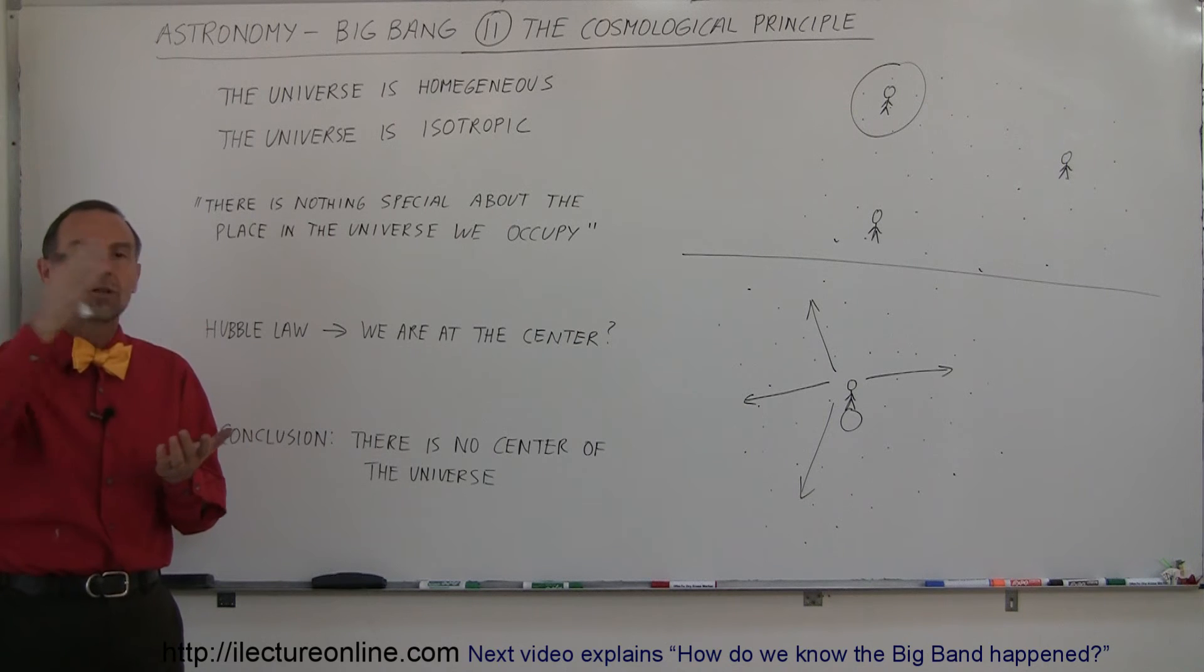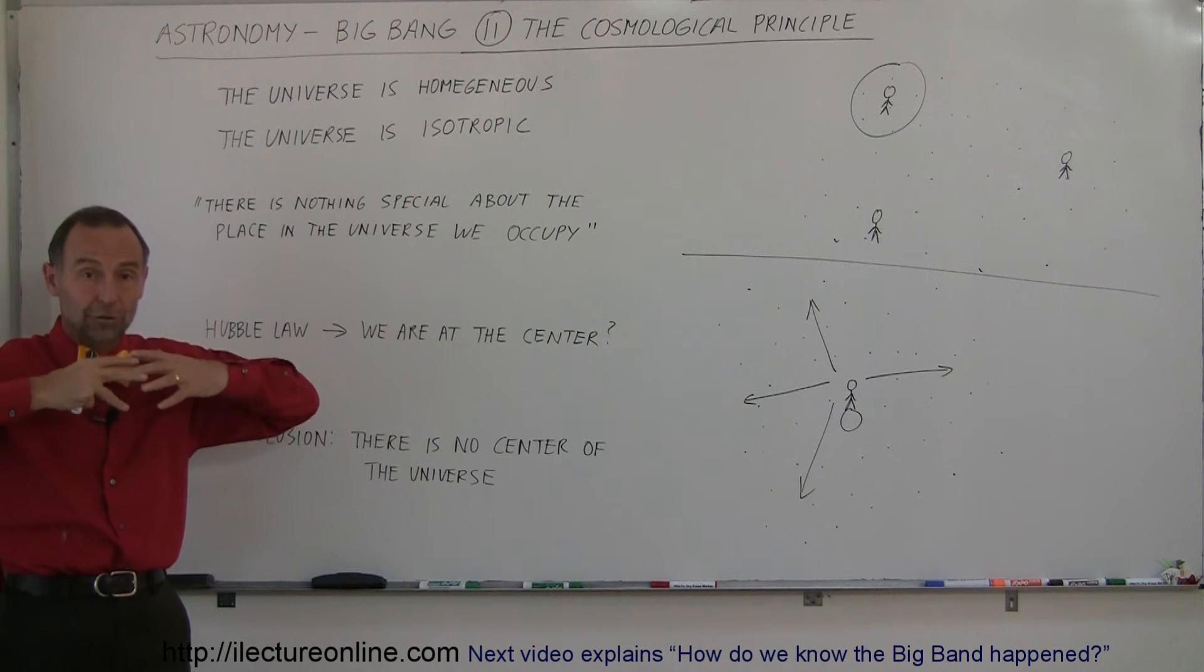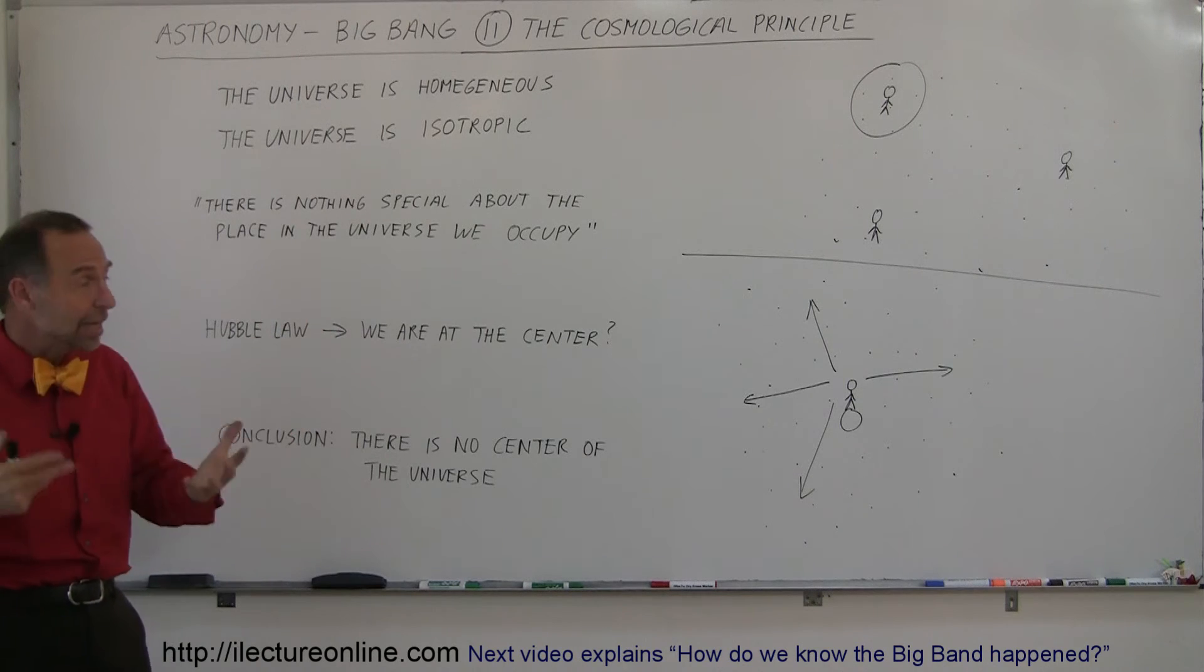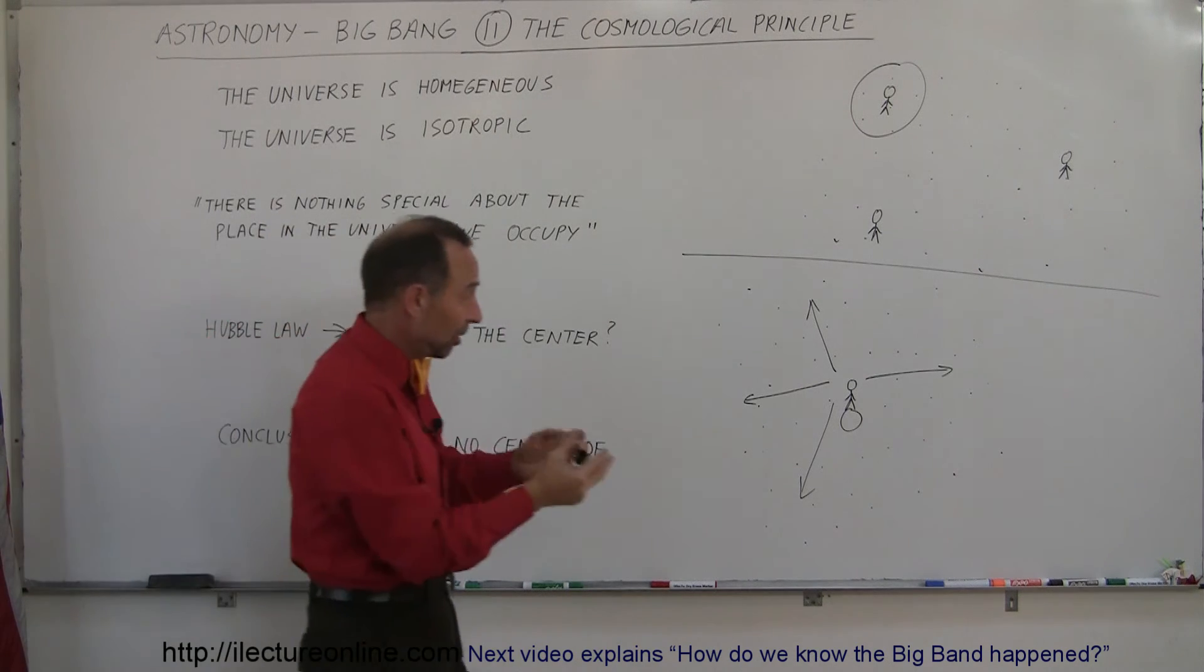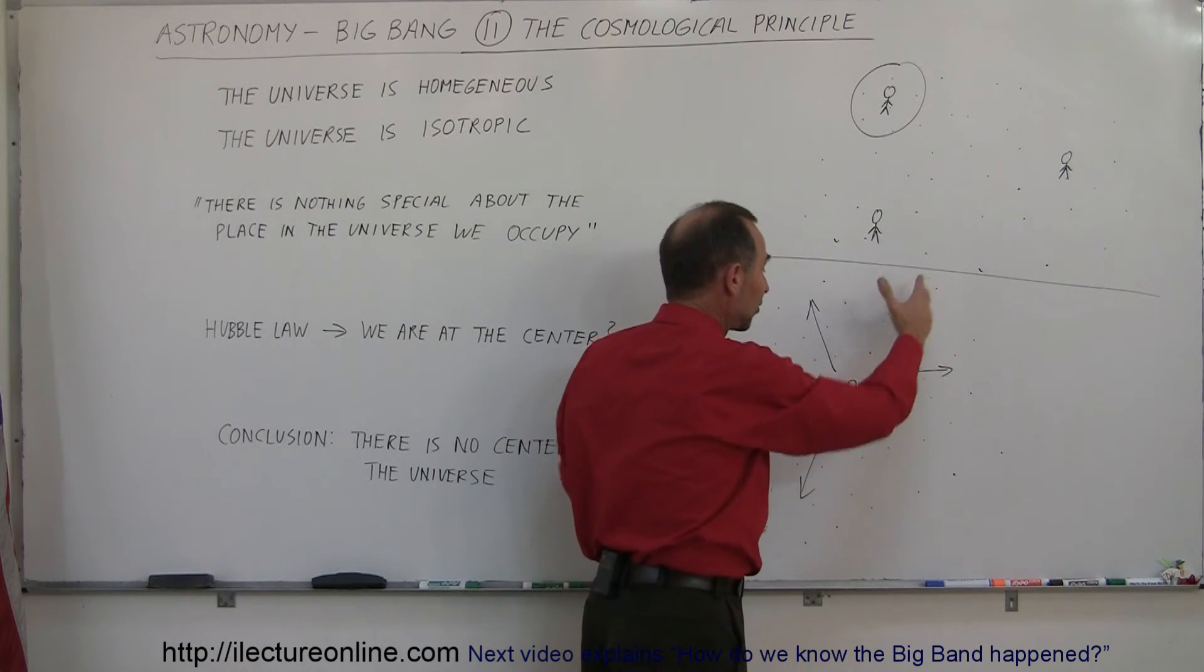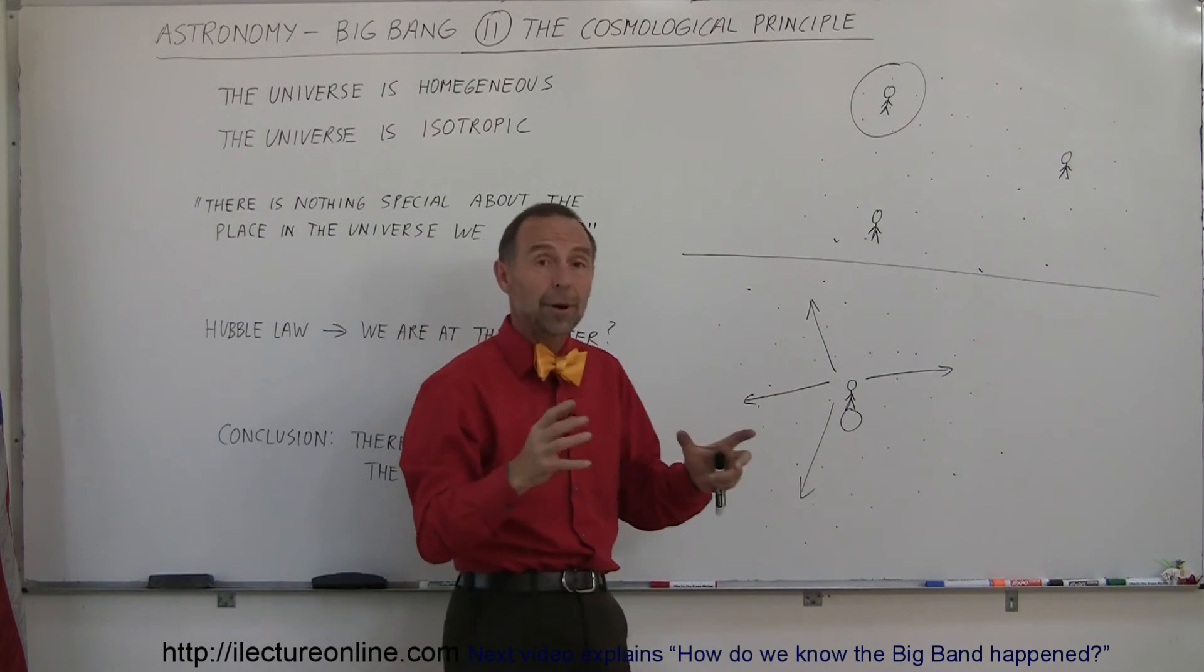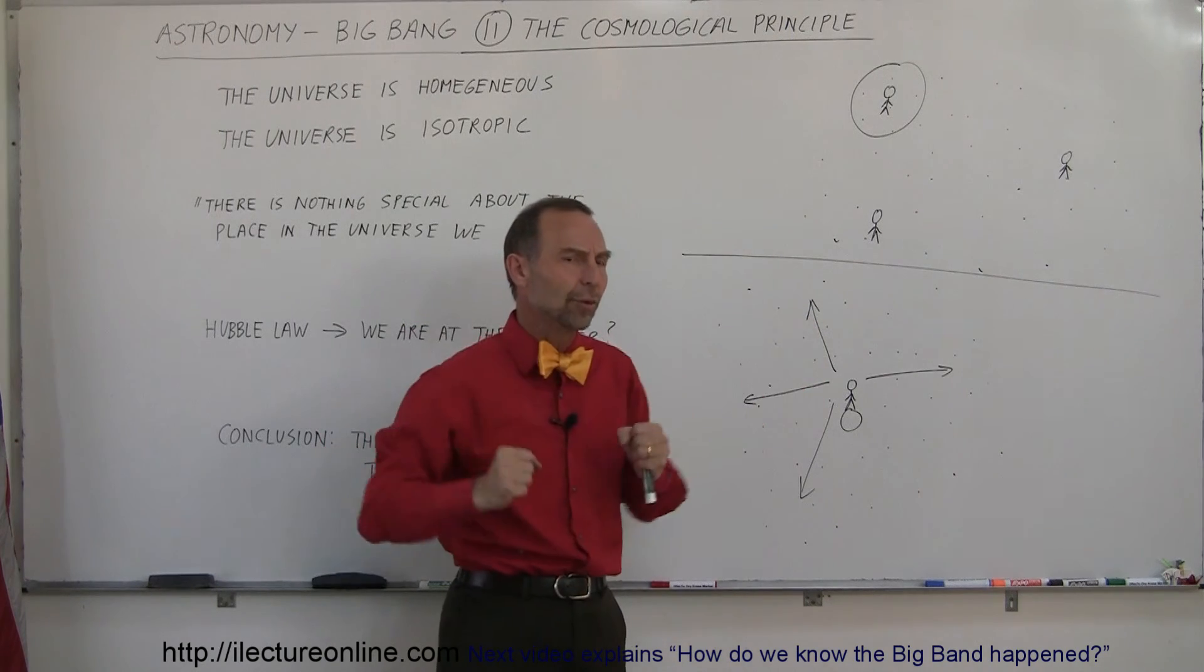And when Hubble began to study the universe and began to realize that the universe was expanding, where everything seemed to be moving away from us, that really seemed to indicate that, yes, we're at the center right here. Let's say we're right here, and we see all the galaxies expanding away from us. And so the first inclination was to say, maybe we are at the center of the universe, and everything else moves away from us.